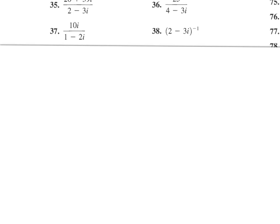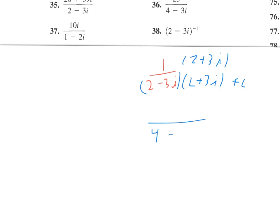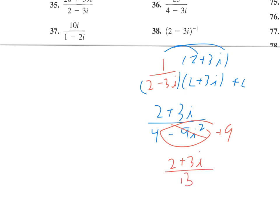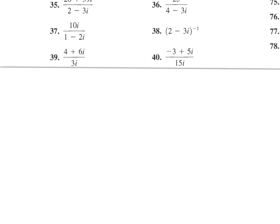Number 38: we're not allowed to send that negative one power into the parentheses because of the adding or subtracting. So I'll rewrite it as one over the expression, then multiply by the conjugate. On the bottom we get 4 minus 9i squared; on top we distribute the one. Turning i squared into negative one gives us a plus 9, so we get 2 plus 3i, combining like terms gives 13 in the denominator — and again, split into two fractions.